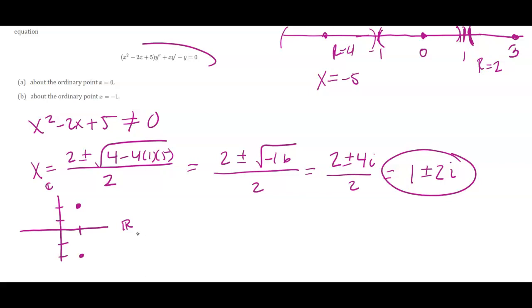If I want to figure out the distance to that ordinary point of 0, 0 is here because 0 is equal to 0 plus 0i. So I could use the Pythagorean theorem or the distance formula in order to find that. So it's going to be the square root of 1 squared plus 2 squared, or the square root of 5 would be my radius of convergence around X equals 0.